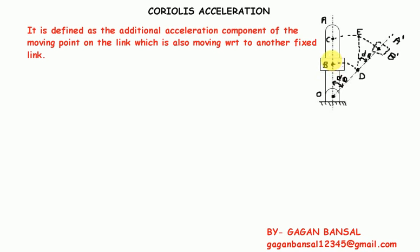In the shaper mechanism, the slotted lever is also moving while the slider is moving inside it. We have an additional component acting on the body. Point B, which is the center of the slider, moves to the final position B dash instead of point D. This additional movement from E to B dash is due to the Coriolis component, and the acceleration perpendicular to this motion is the Coriolis acceleration.